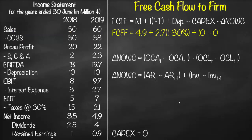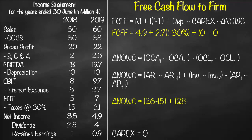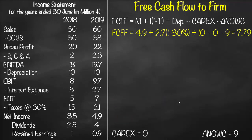The change in net operating working capital = (Accounts Receivable(t) − Accounts Receivable(t−1)) + (Inventory(t) − Inventory(t−1)) − (Accounts Payable(t) − Accounts Payable(t−1)). From the balance sheet: (26 − 15) + (28 − 20) − (15 − 5) = 9. So in our formula we put minus 9.